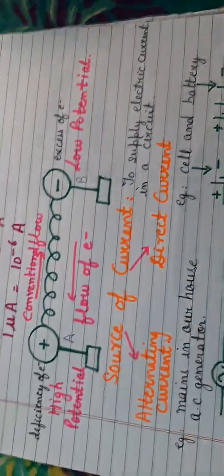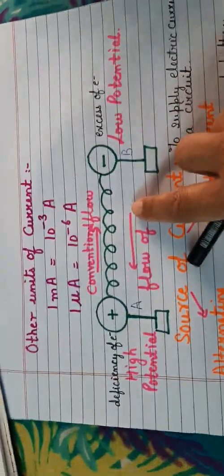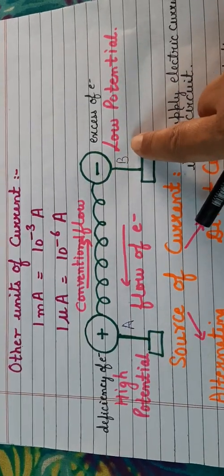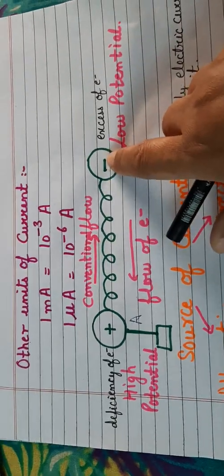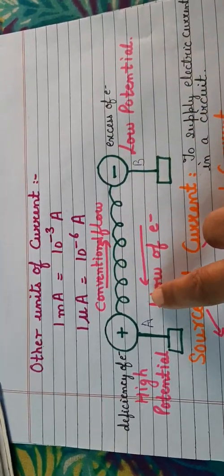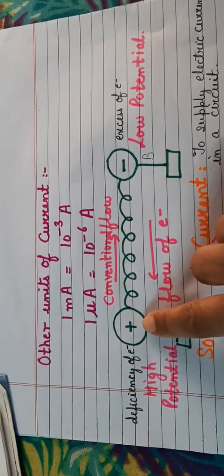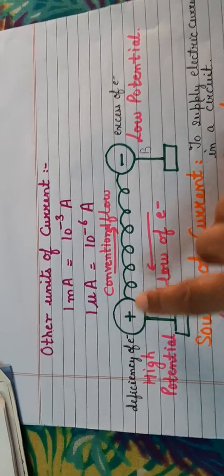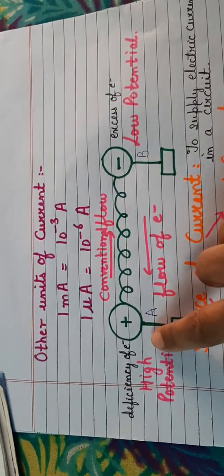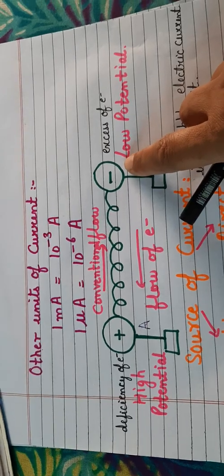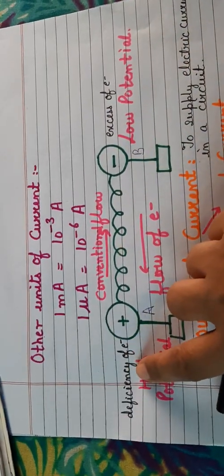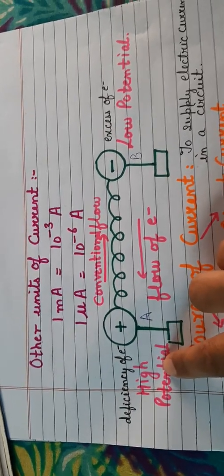Now let us move to the next important topic. I have drawn a diagram with two conductors A and B connected by a wire. One conductor is at high potential and the other at low potential. The conductor with a deficiency of electrons is denoted by a plus sign and is at high potential, while the conductor with an excess of electrons is denoted by a minus sign and is at low potential.